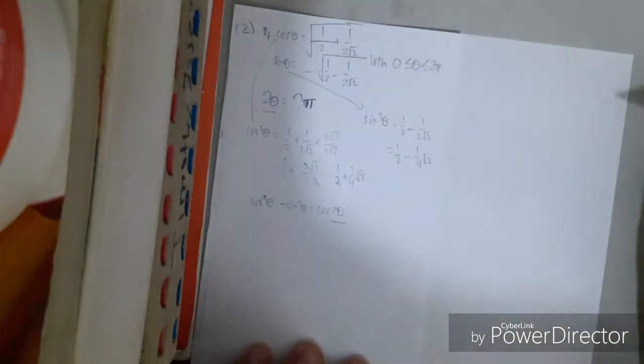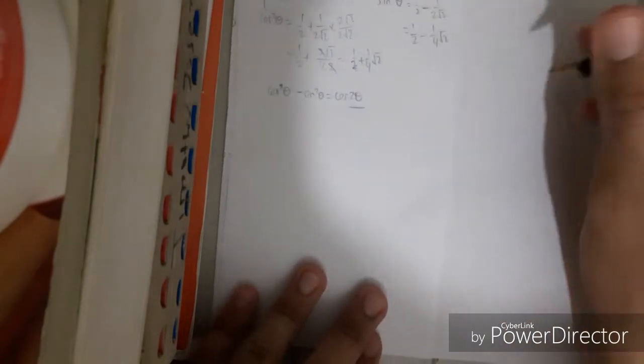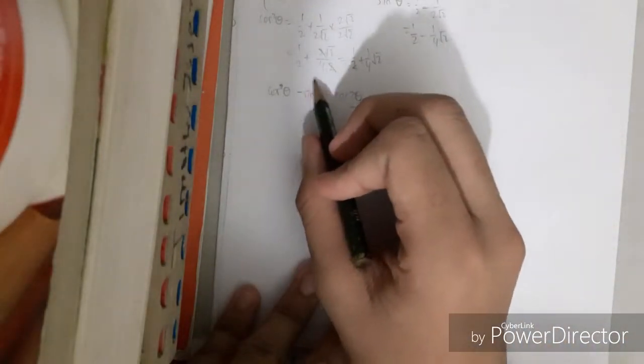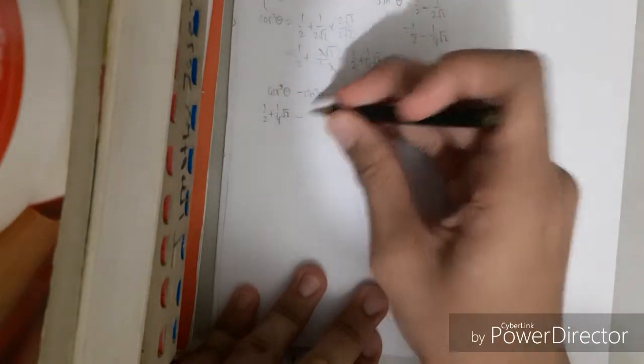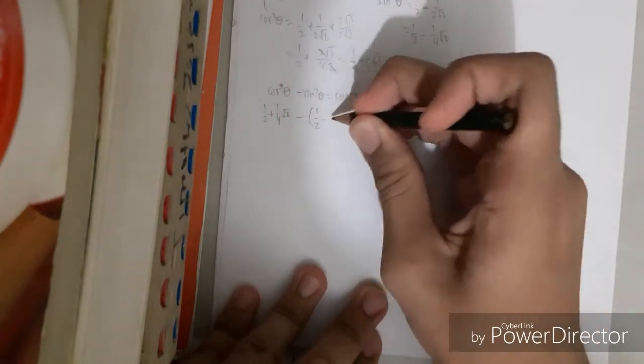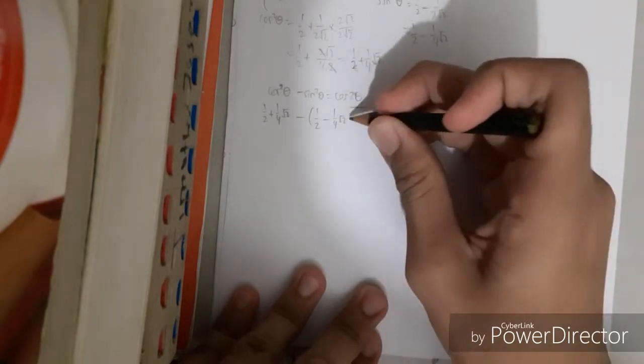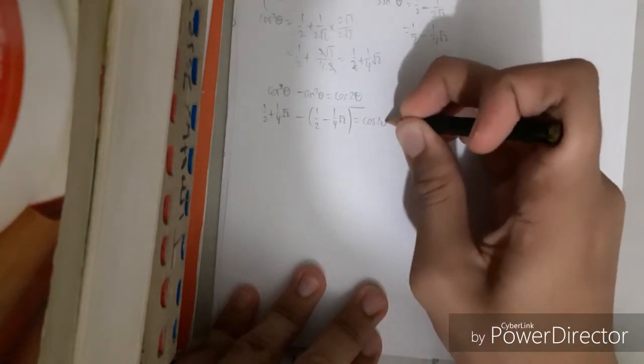So 2 theta, and they ask 2 theta, and I get that. We can write cos squared theta is 1 half plus 1 fourth root 2 minus sin squared theta which is 1 half minus 1 fourth root 2, equals cos 2 theta.